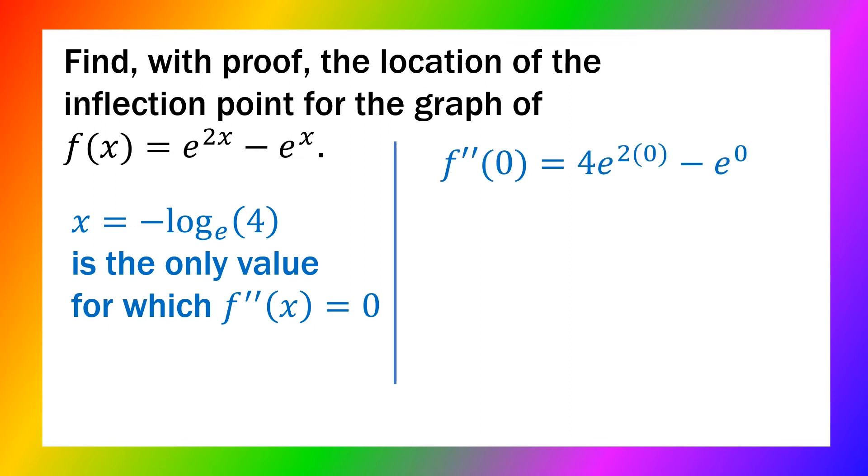But to show that it does exist, we need to show that the second derivative changes sign. To the right at x equals zero, we find the second derivative is positive. And to the left at x equals negative two, we can show that the second derivative is negative.